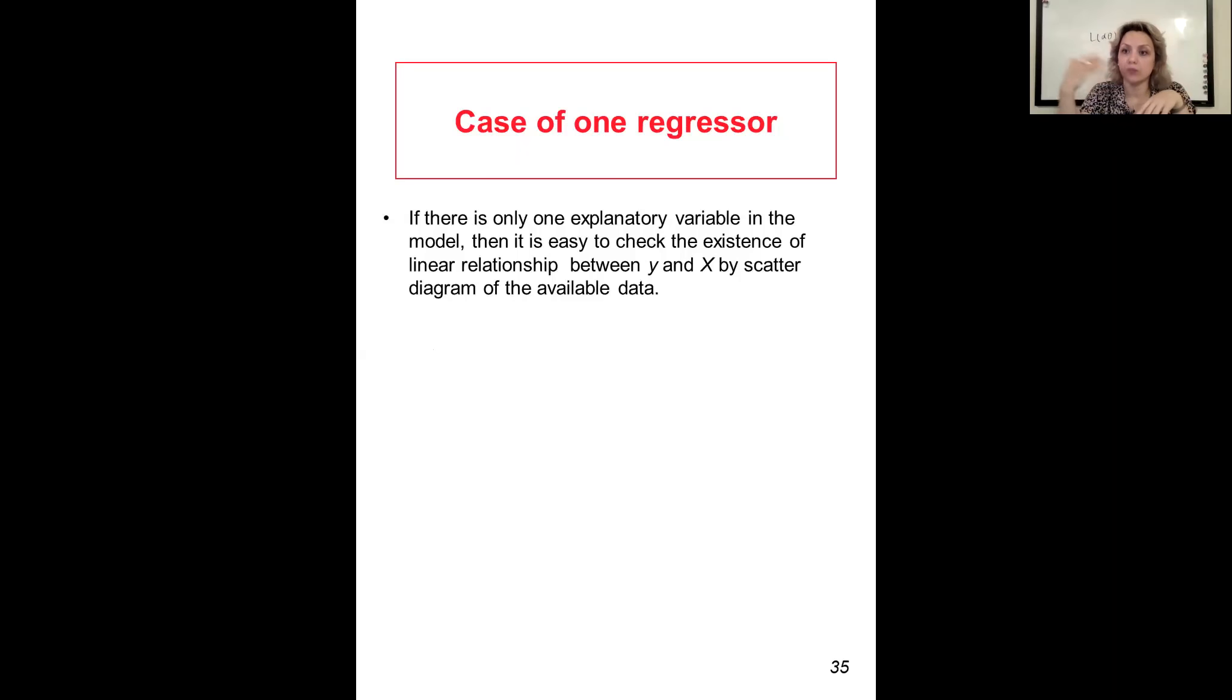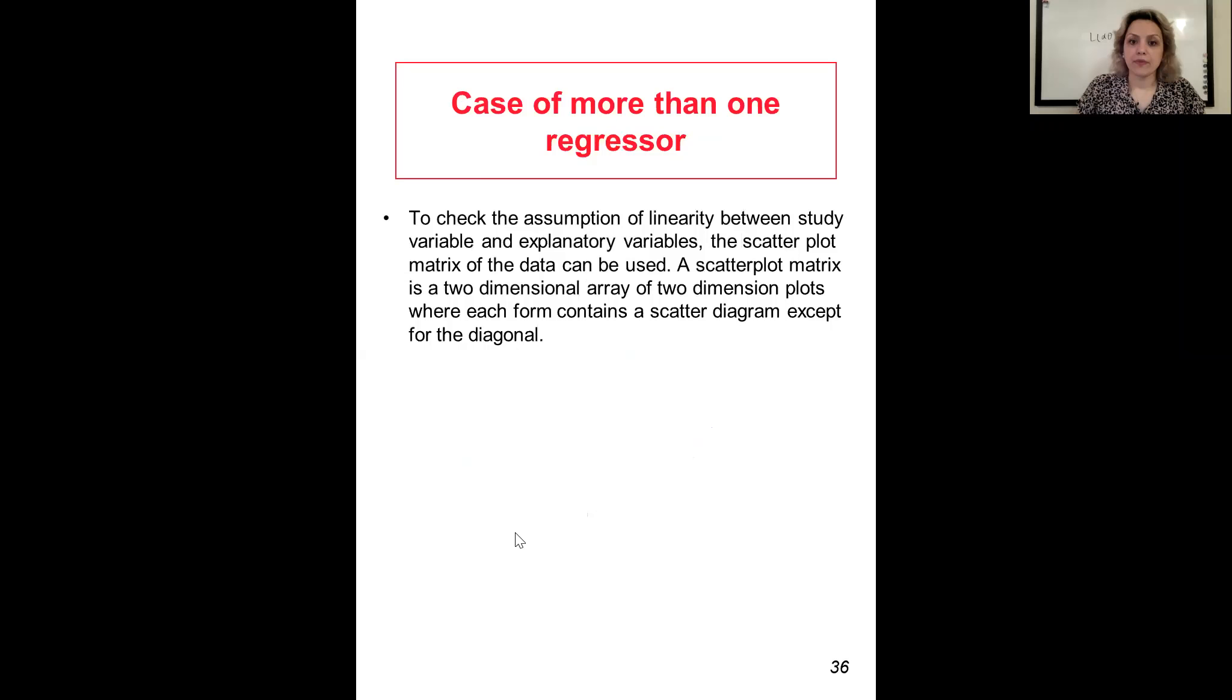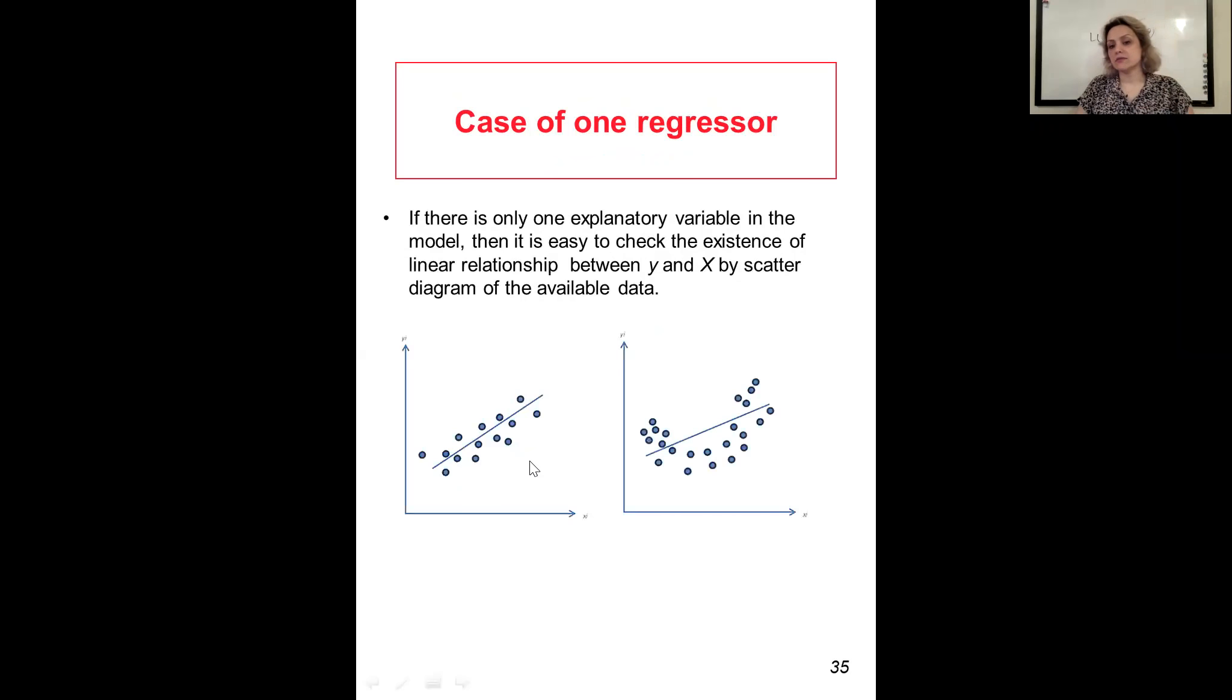If there is only one explanatory variable in the model, then it's easy to check the existence of the linear relation between x and y by a scatter diagram of the available data. You can say whether they have a linear relation to each other or not by looking at the scatter plot.